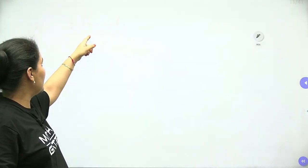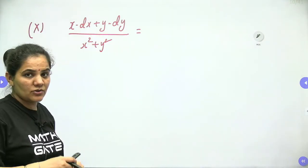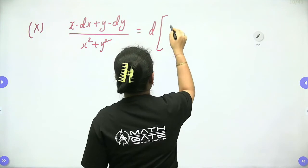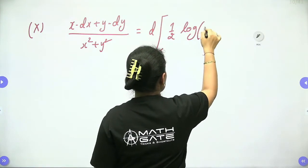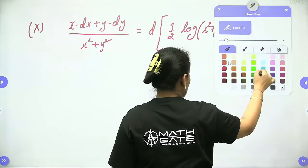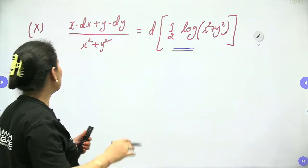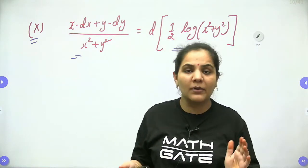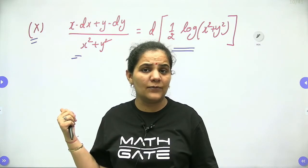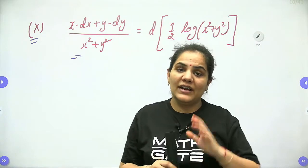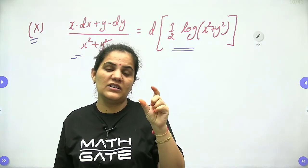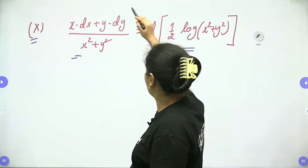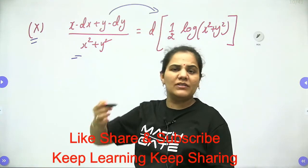Form 10: (x dx + y dy) / (x² + y²) is the differentiation of ½ log(x² + y²). Note the key difference from form 4: here the numerator has a positive sign (x dx + y dy), whereas form 4 had a negative cross term. These 10 forms are the basis of the inspection method — recognizing any such pattern in a given equation allows you to simplify it directly.